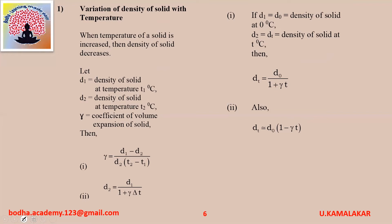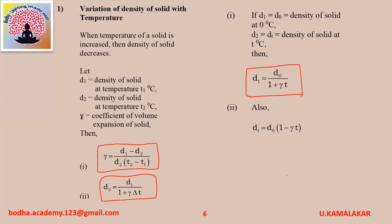Variation of density of solid with temperature: when temperature of a solid is increased, density of the solid decreases. Let D1 be density of solid at temperature T1°C, D2 be density at T2°C, and gamma be coefficient of volume expansion. Then gamma equals (D1 minus D2) divided by (D2 into T2 minus T1). Also, D2 equals D1 divided by (1 plus gamma into delta T). If D1 equals D0 (density at 0°C) and D2 is density at T°C, then D2 equals D0 divided by (1 plus gamma T), and approximately D2 equals D0 into (1 minus gamma T).